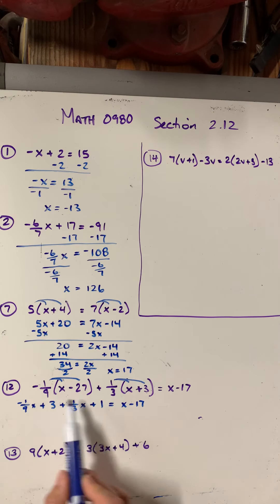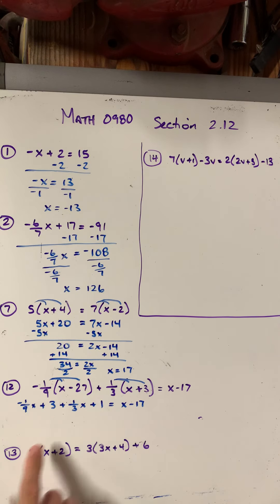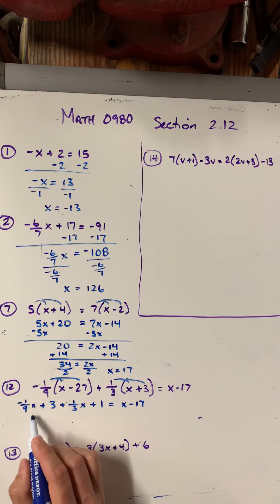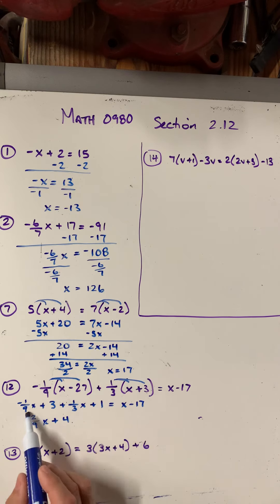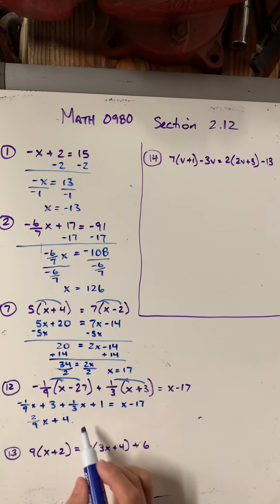So I'm going to continue working with simplifying this left side. So the first thing I'm going to do is I'm going to add negative 1 9th plus 1 3rd. And I'll get positive 2 9th. So 2 9th x and then 3 plus 1 is 4. So I combine these two like terms and then those two like terms. Equals x minus 17.